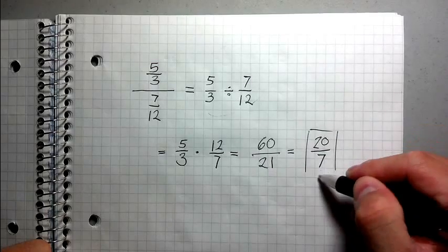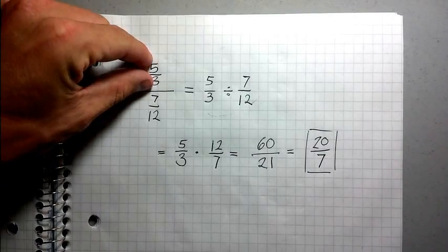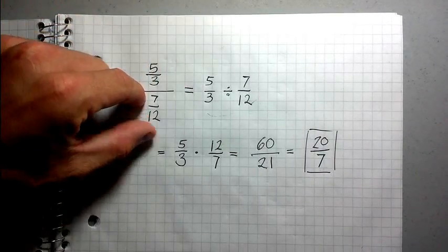So this is your fully reduced answer. So what this means is that five thirds divided by seven twelfths is 20 over seven.